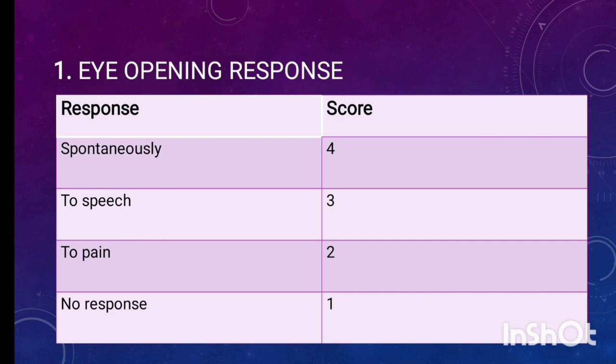To check this response we have to apply pressure and apply some painful stimuli. You can use a pen and apply on the nail bed gradually and increase the pressure, then the patient will open his eyes so we'll give this score 2. The last one is no response. After doing all these activities if the patient shows no response, then we'll give this score 1.